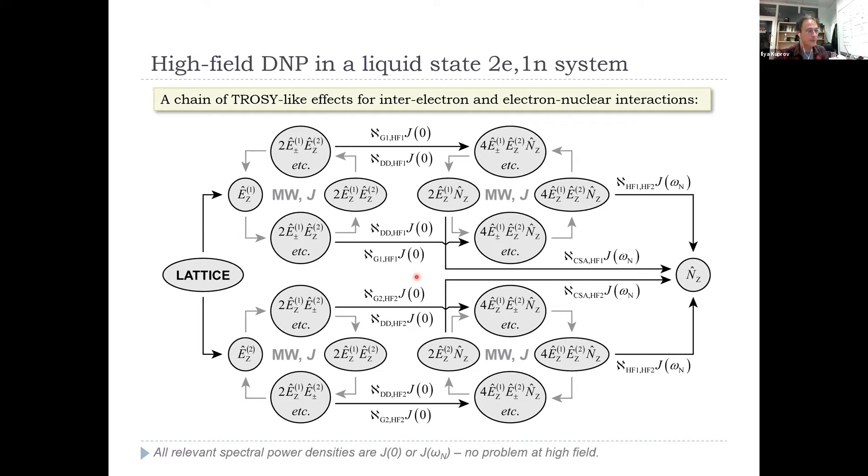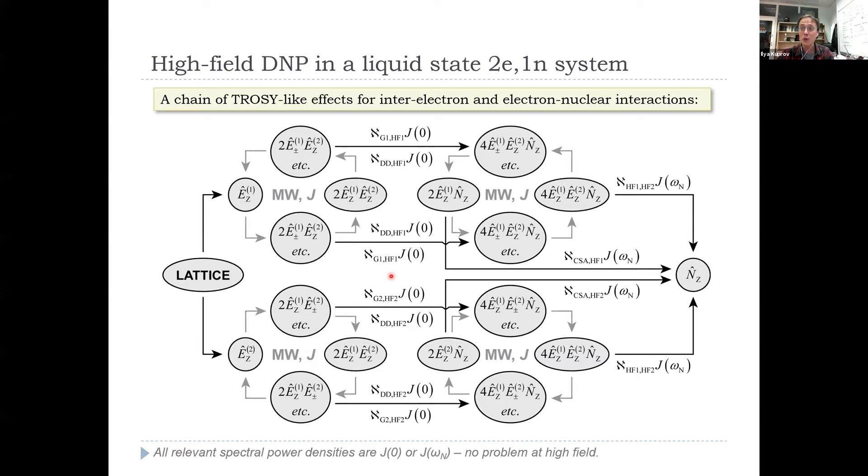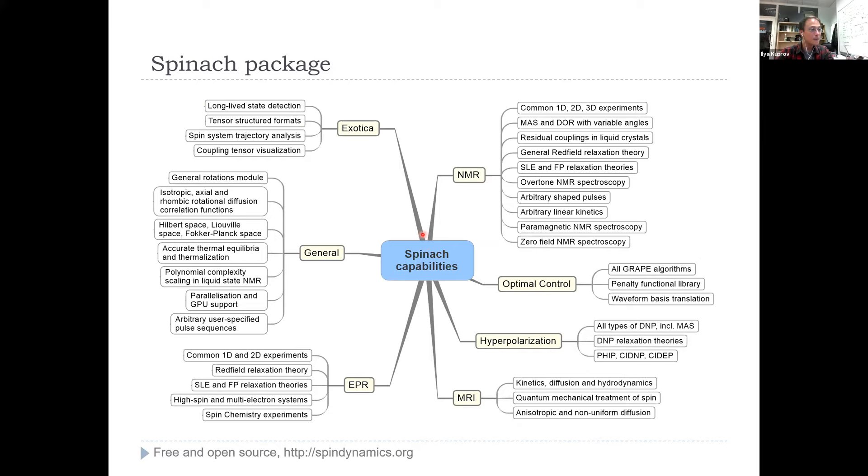Once again, we've yet to cook a molecule that does it, but at least in principle it exists. The way we discovered this was two things. First is I don't know how Lucho knew this, but he suspected it must be the case. Then Maria has run several weeks worth of brute force torture on the local supercomputer to try and find these parameters. Then it was my job to persuade Spinach to spill the secrets as to what just happened, and this mechanism came out. It's now on arXiv. We sent it to JMR, but there it is.